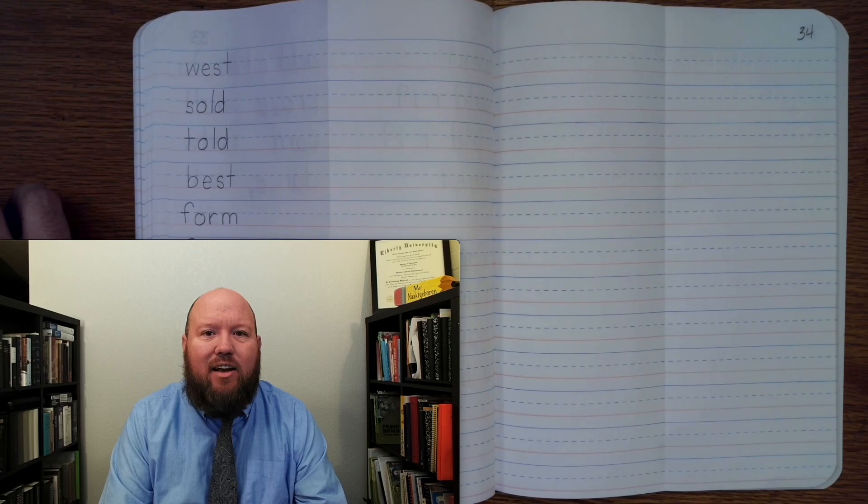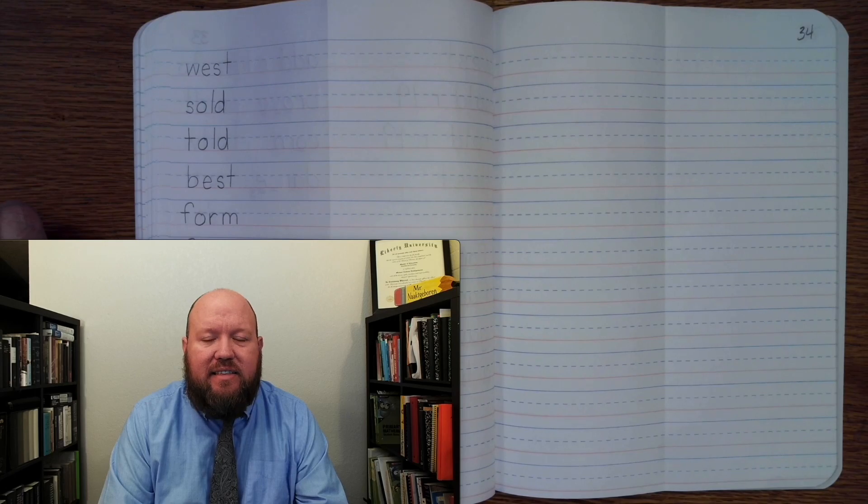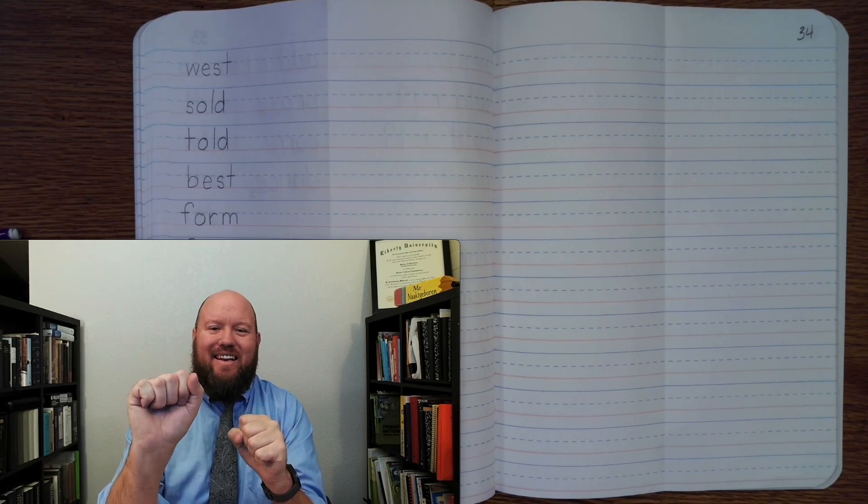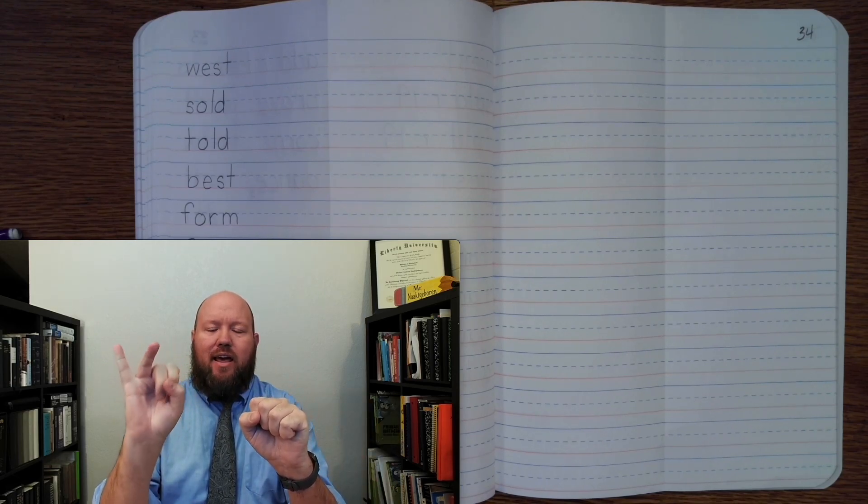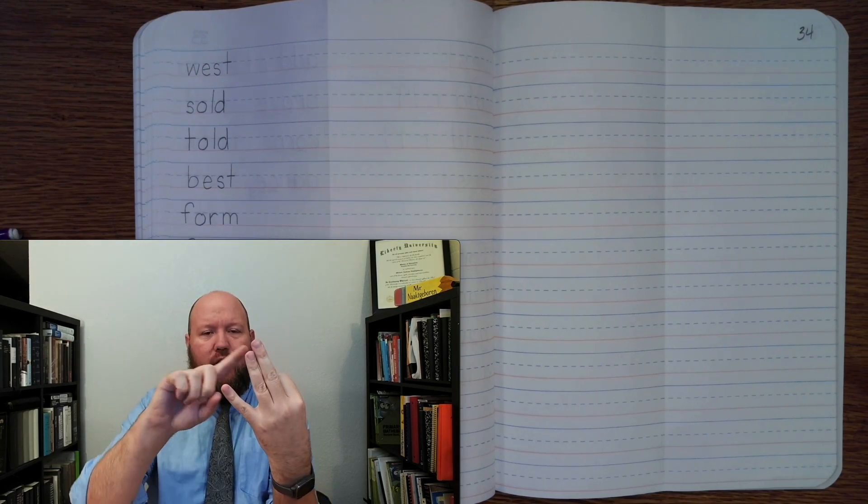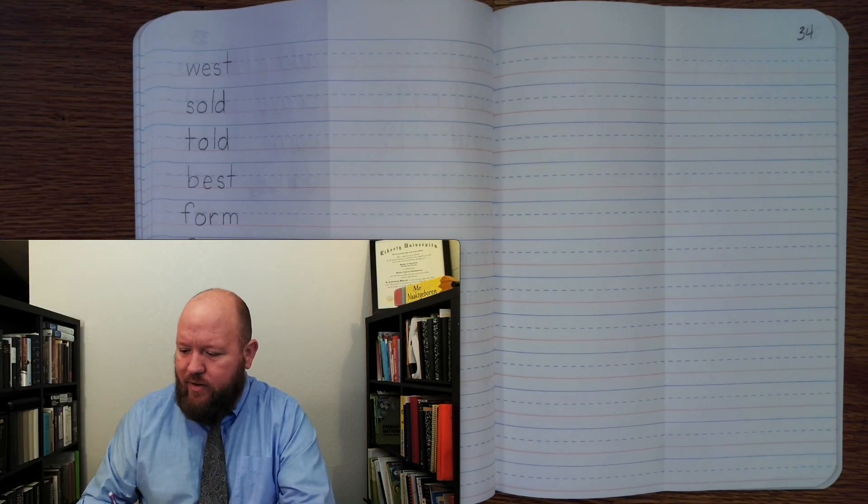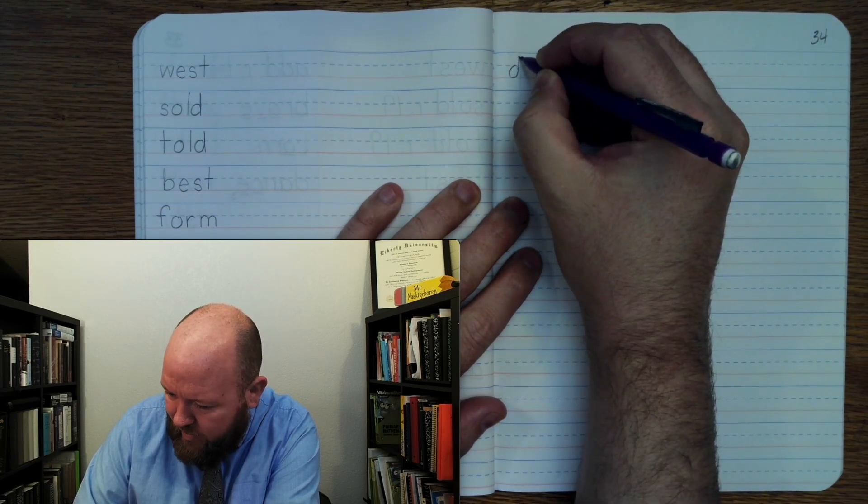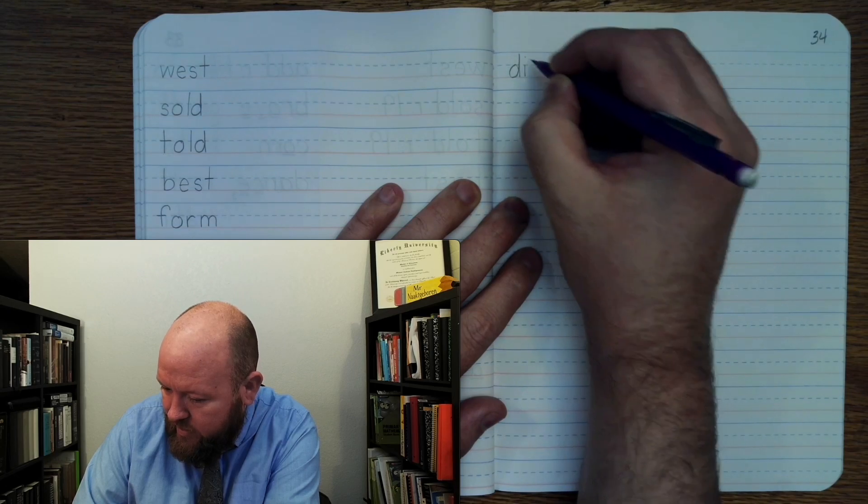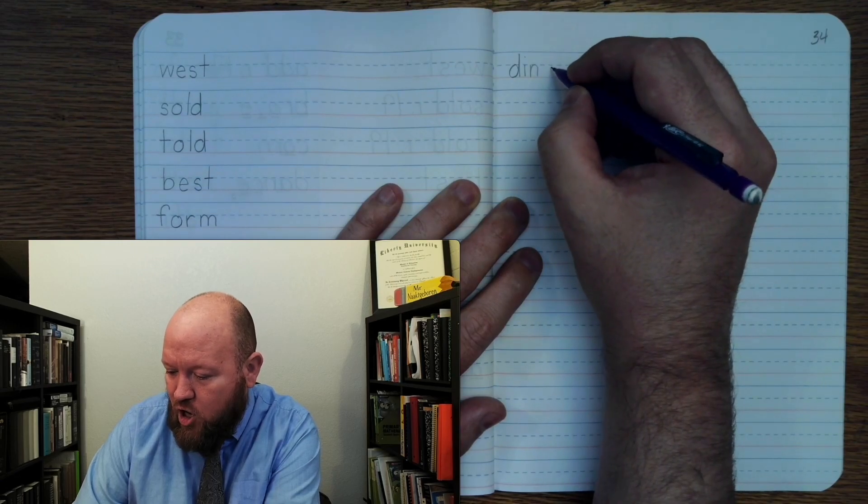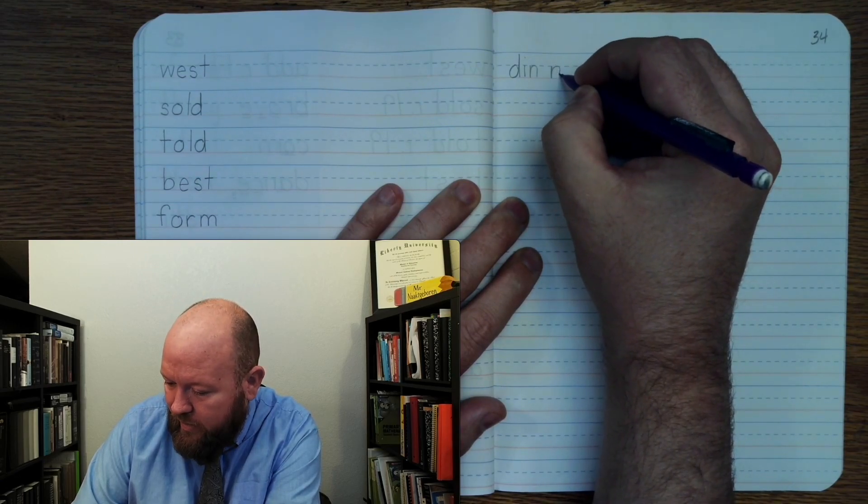The first word is dinner. Like, I had chicken nuggets last night for dinner. Dinner. Base word, dinner. Din-ner. D-I-N-N-E-R. Dinner. Here we're going to use the E-R of her. Dinner. Two syllables. D-I-N, space, next syllable, N-E-R.